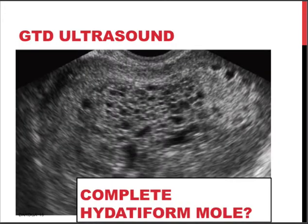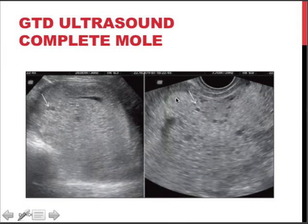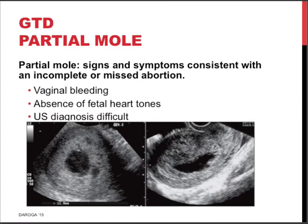Here are ultrasound images. This is clearly not a normal intrauterine pregnancy — we see small anechoic compartments representing the grape-like vesicle structures visible with the naked eye. Here is a picture of a complete mole, less typical but with those small anechoic compartments reminiscent of molar pregnancy. The partial mole picture is much more difficult to diagnose on ultrasound — it could look like a collapsed sac — and histopathological examination of the passed material is important in cases of doubt.